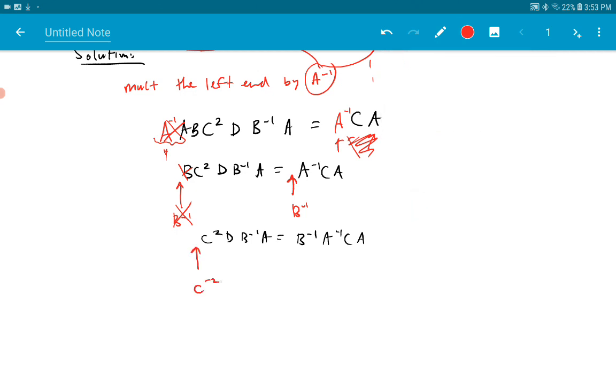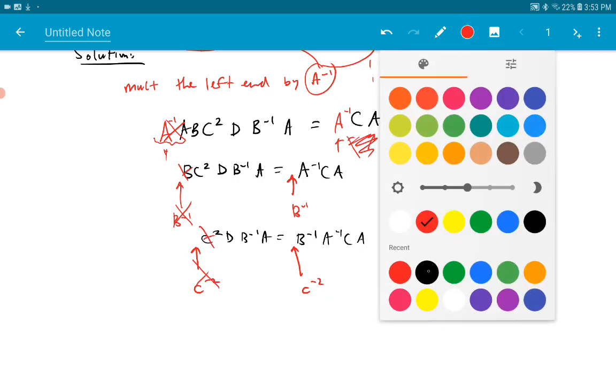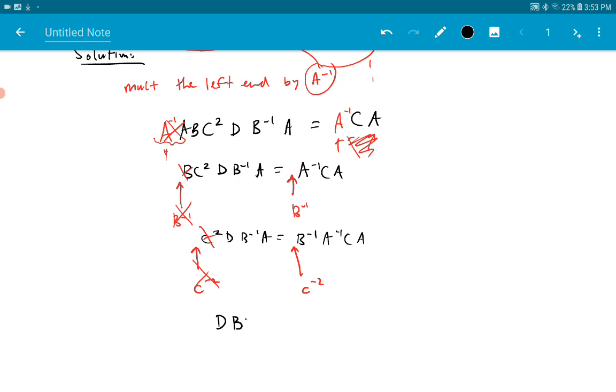I'm going to put a C⁻² here and a C⁻² here. We'll cancel. DB⁻¹A equals C⁻²B⁻¹A⁻¹CA.